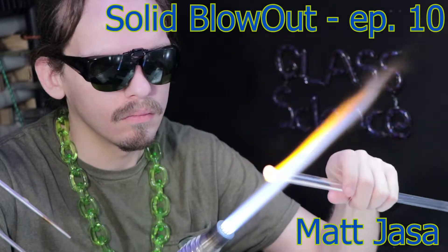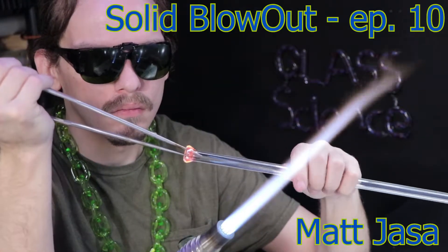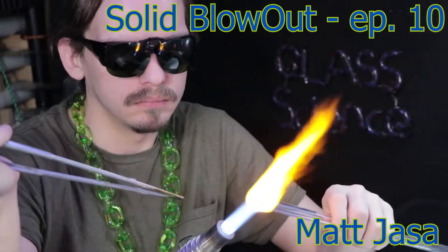In the last video we were checking out the coil pot technique to use to make some colored tubing. This time we'll be doing the solid color blowout.